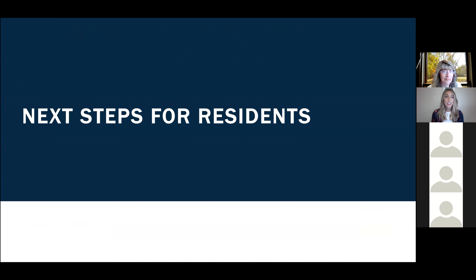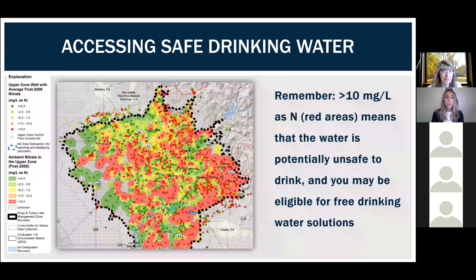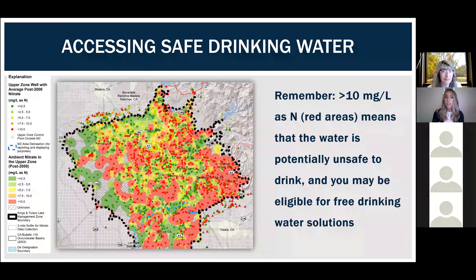Thank you so much, Vicki. Now that everyone has a background on nitrates in groundwater and who the Kings Water Alliance is and the area it serves, I'd like to offer next steps for residents when it comes to accessing safe drinking water. This map shows nitrate levels around the priority one area of the Kings Water Alliance. If you are a resident who relies on a domestic well for drinking water and are located in the priority one area with nitrates greater than 10 milligrams per liter, you may be eligible to receive free solutions from the Kings Water Alliance.